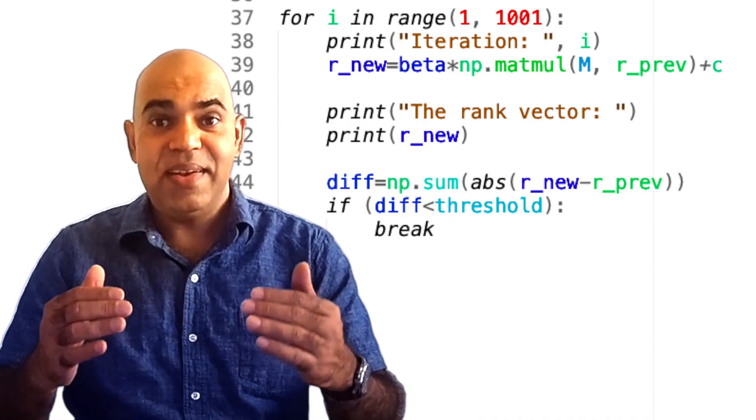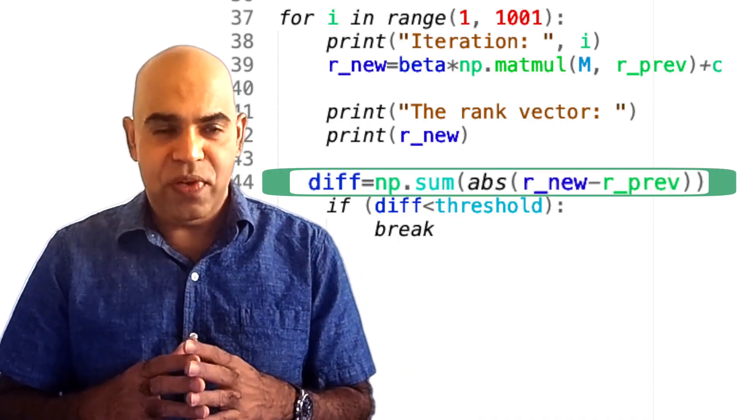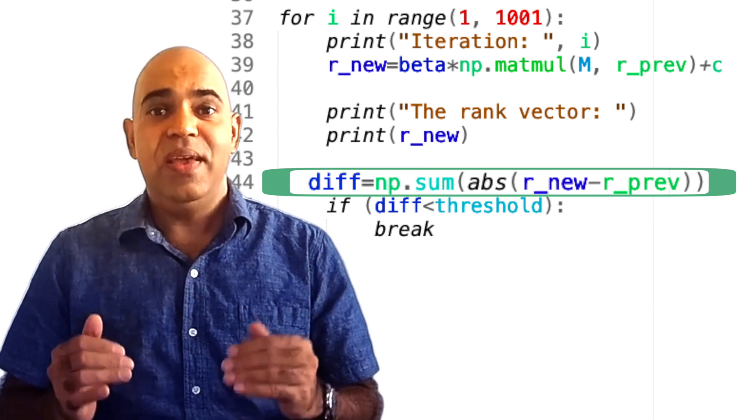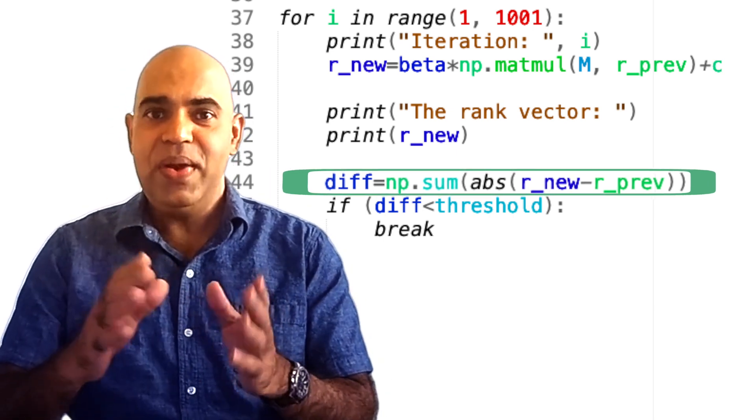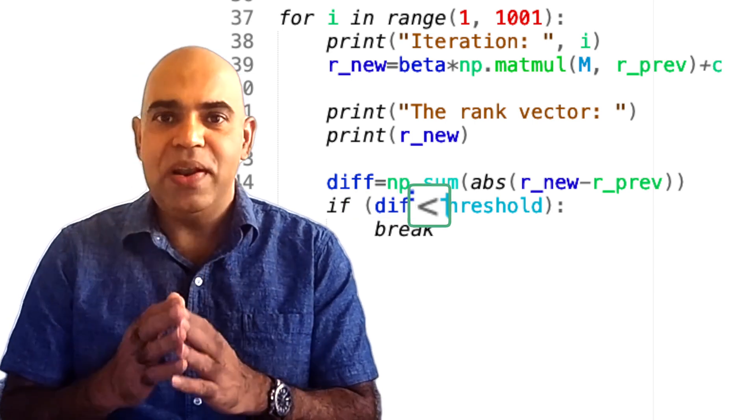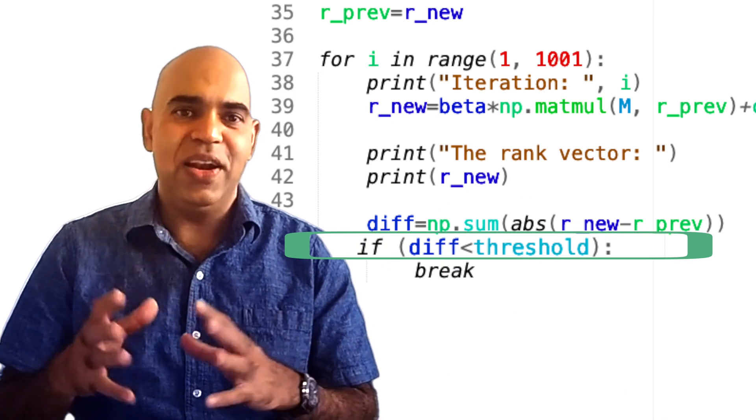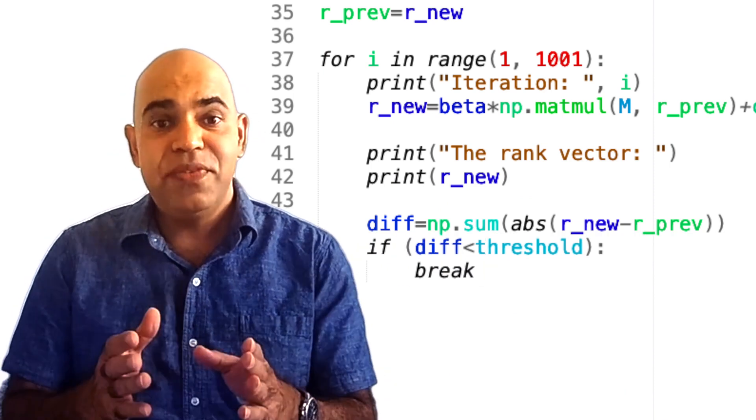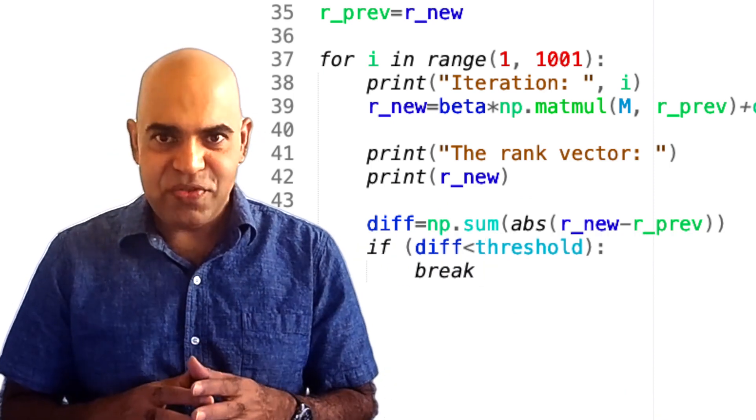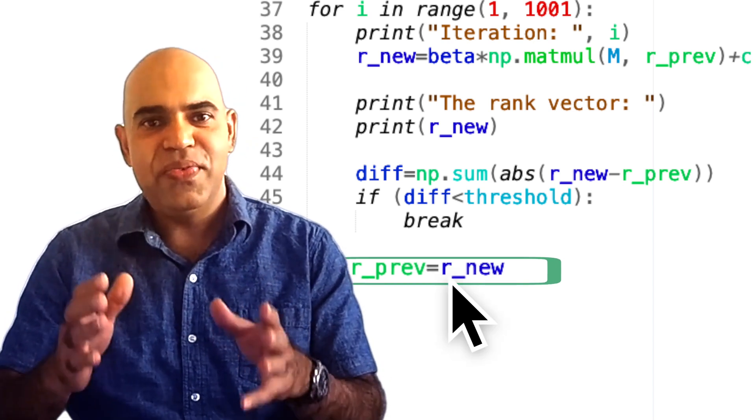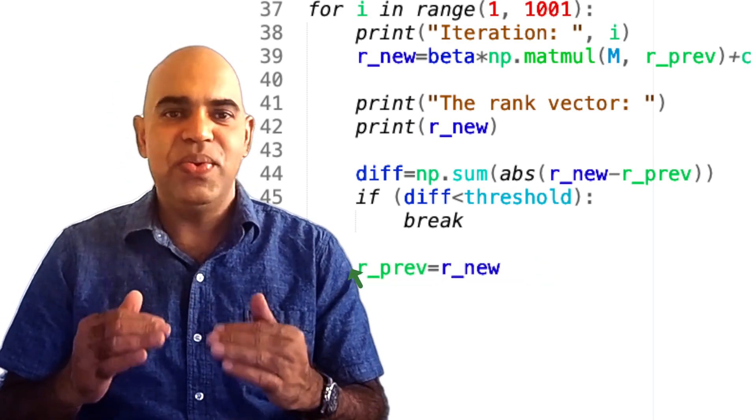In this code, we are saying that if the L1 norm value, which is just a number of the absolute difference between the two vectors r_new and r_prev is smaller than a small threshold, we consider that the algorithm has converged. If the rank vector has not converged, we update r_prev with the values of r_new and continue to the next iteration.